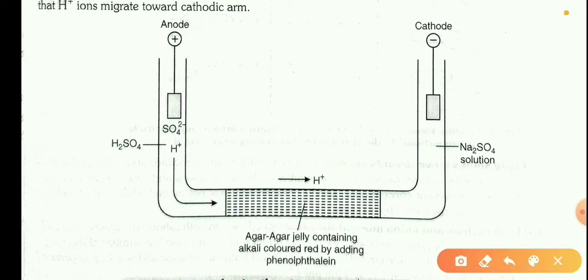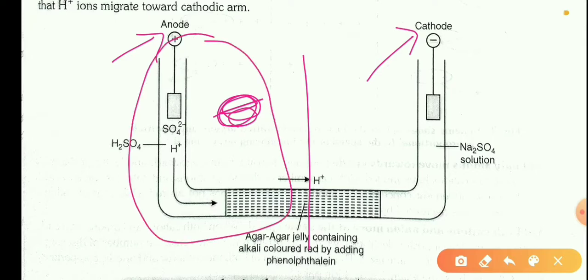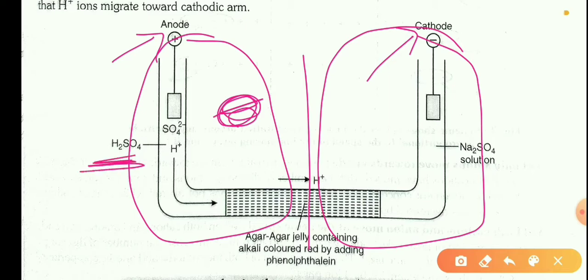Now two electrodes were taken which are anode and cathode with positive and negative charge. This area is called anodic arm, and this whole area is called cathode arm.